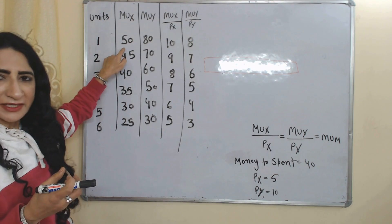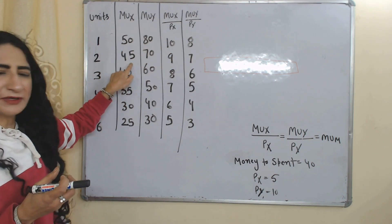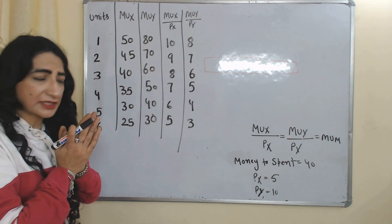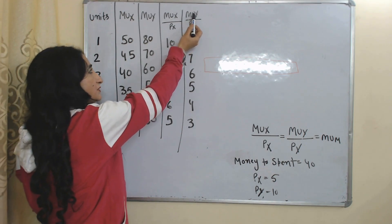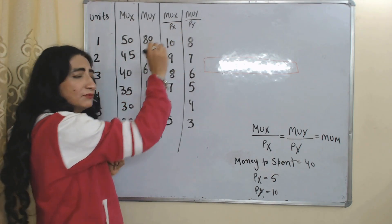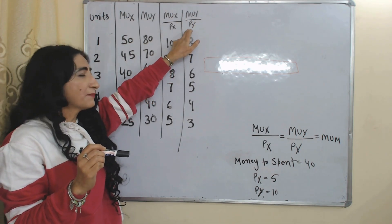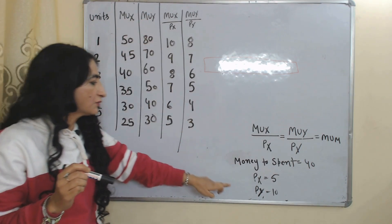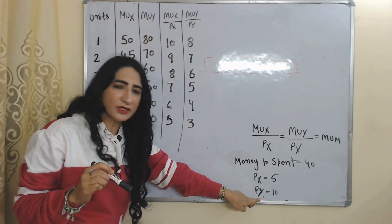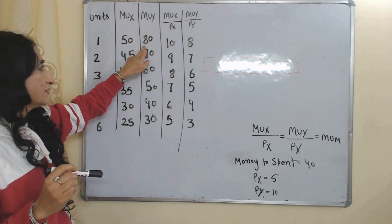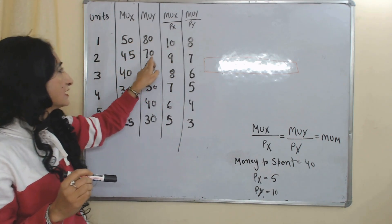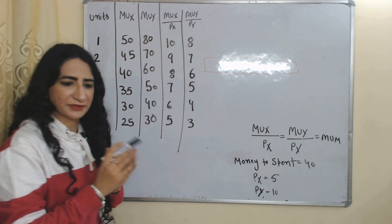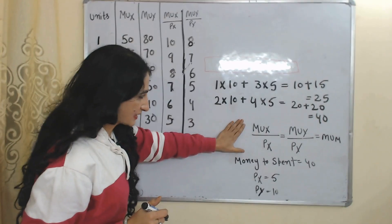So 50 divided by 5 equals 10, 45 divided by 5 equals 9, and we calculate the same way for other units. Similarly, we calculate MUY over PY by dividing the marginal utility of Y by the price of Y. We assume the price of one unit of Y is equal to 10. So 80 divided by 10 equals 8, 70 divided by 10 equals 7, and we calculate the same way for other units.